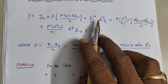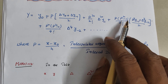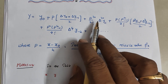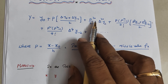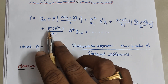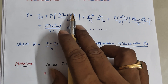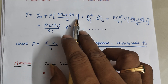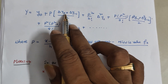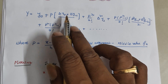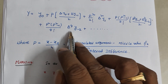Plus p squared into p squared minus 1 by 4 factorial delta power 4 y minus 2. The first term, third term, and the terms with p squared by 2 factorial and p into p squared minus 1 follow a pattern. The odd-power delta terms — delta y0 and delta y minus 1 — are averaged, and the even-power terms — delta squared and delta power 4 — are also averaged.